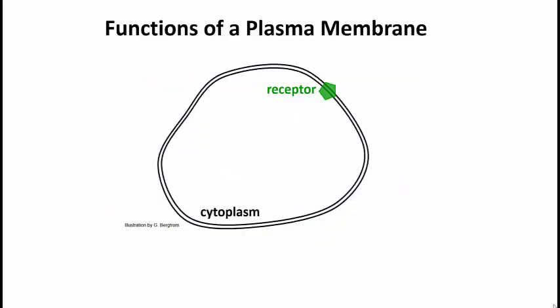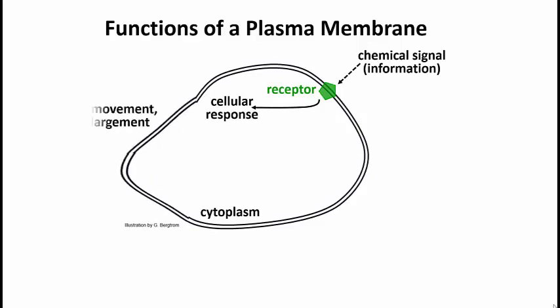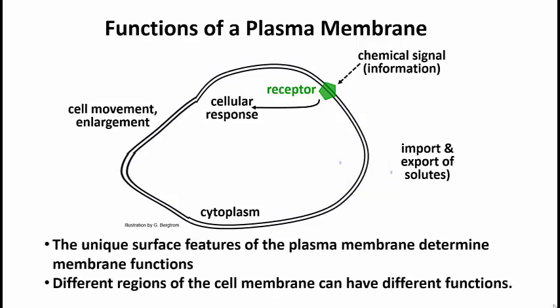Think of this as a cell — any cell, say a blood cell. It has multiple functions based on the proteins embedded in the membrane. Some proteins are receptors for receiving chemical signal information. Some proteins are required for movement and shape change, as in an amoeboid cell — for example, a phagocyte changes its shape as it engulfs a bacterium in your bloodstream. There are also proteins involved in import or export of molecules, and these might be evenly distributed around the cell surface. But different regions of cell membranes can actually have different functions.